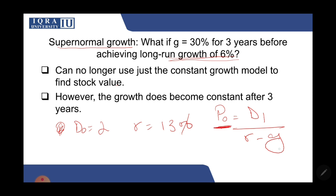In order to use this model, the growth rate has to remain the same till infinity. The formula requires growth rate to stay constant forever. Here the growth rate is changing — starting at 30% but then becoming 6%. So you cannot use this formula for the first three years because 30% growth won't continue to infinity. However, after three years the growth does become constant at 6%, so after that point you can use this formula.